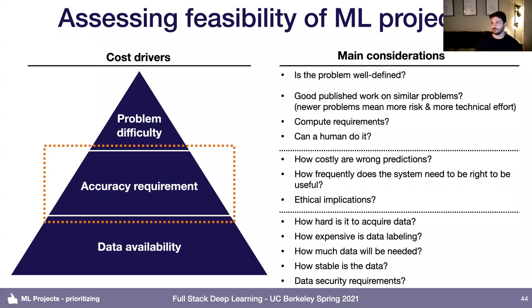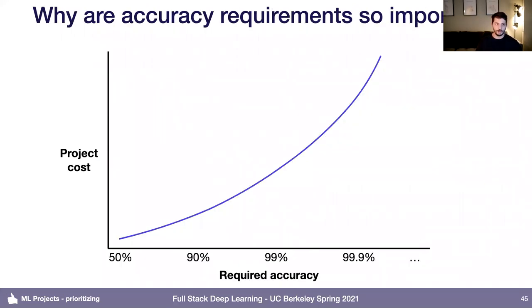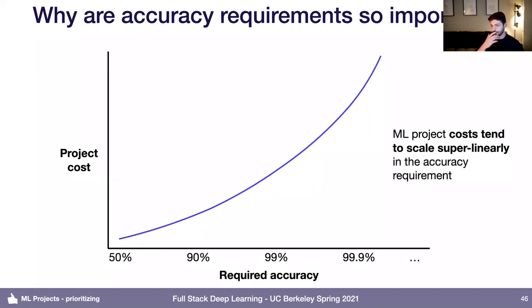I want to double-click on the accuracy requirement for a second, because it can be counterintuitive how important this is. Project costs tend to scale super-linearly in your required accuracy. As you increase the number of nines in your required accuracy, that tends to increase your project costs by maybe a factor of 10 or something like that as a very rough estimate. So if you really need a model that's 99.99% accurate, that's going to be a lot more expensive to build than if you only need 99.9% accuracy. The fundamental reason is that you typically need a lot more data and much higher quality labels to achieve really high accuracy numbers.